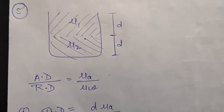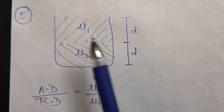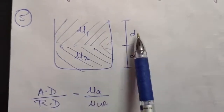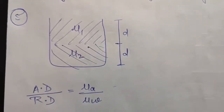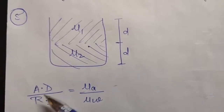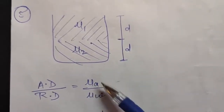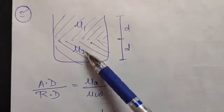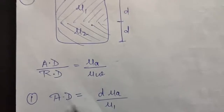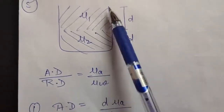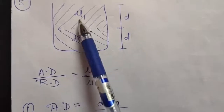In question number 5, it is given: in a vessel of depth 2d, a liquid is filled up to a depth d of refractive index mu2, and another liquid is filled at depth d of refractive index mu1. You have to calculate total apparent depth. As you have studied, the formula is apparent depth upon real depth equals mu_a upon mu_w. We have two liquids, so we will write apparent depths for both of them separately. For mu1, apparent depth will be real depth d times mu_a divided by mu1.